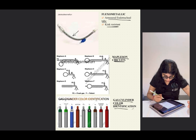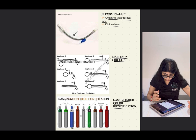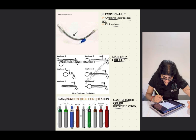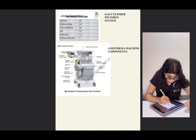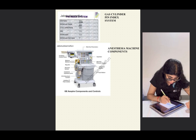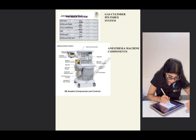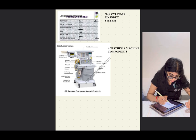For gas cylinder color identification: oxygen is blue, CO2 is gray. The pin index system codes are: oxygen — 2,5; nitrous oxide — 3,5; cyclopropane — 3,6; air — 1,5; nitrogen — 1,4; and nitrous oxide plus oxygen mixture — 7. Nitrous oxide at 3,5 and nitrous plus oxygen at 7 have been specifically asked in exams.